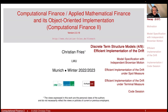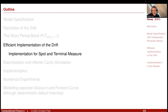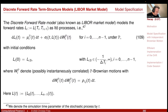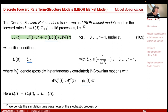What I would like to do now is discuss the efficient implementation of the drift. We are still in our section on the discrete forward rate term structure model. We derived the drift term under the equivalent martingale measure — this is perhaps the key missing piece. The drift term under the spot measure is a quite complicated function.